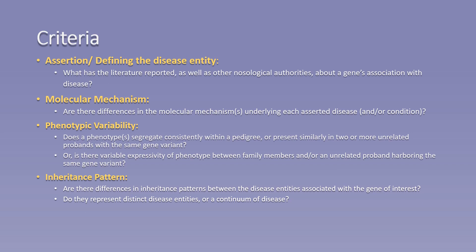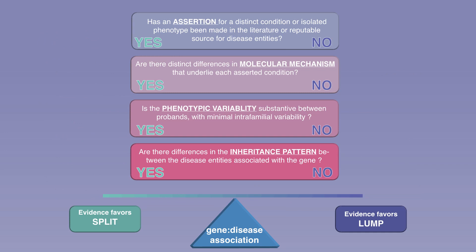Phenotypic variability: does the phenotype segregate consistently within a pedigree or between two or more unrelated probands with the same genetic variant, or is there variable expressivity of phenotypes between family members and unrelated probands harboring the same genetic variant? Inheritance pattern: are there differences in the inheritance patterns between the disease entities associated with the gene of interest? Do they represent distinct disease entities or rather a continuum of disease? The decision to lump or split is a balance of criteria in which curators and experts should weigh the evidence to choose the appropriate disease entity or entities for the curations.